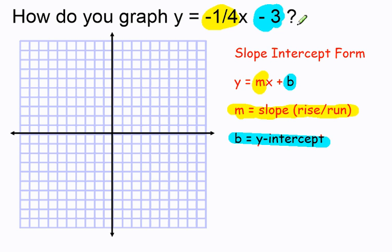And I can use that to graph my first point. A y-intercept of negative three means I start at the point zero, negative one, two, three. And I have a point there.